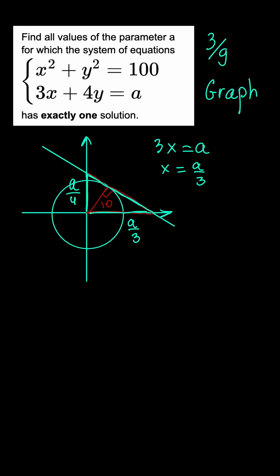Next, we apply the Pythagorean theorem to find the hypotenuse. So we have the square root of a over 3 squared plus a over 4 squared, which, after some calculations, gives us 5a over 12. And that's the hypotenuse.